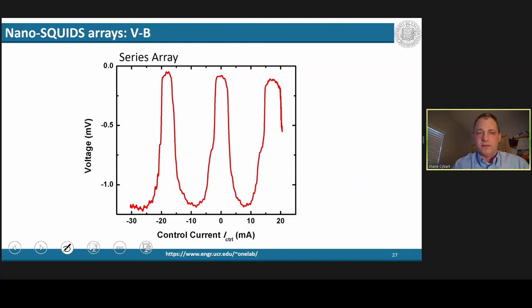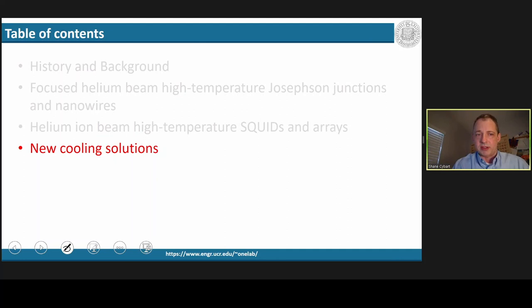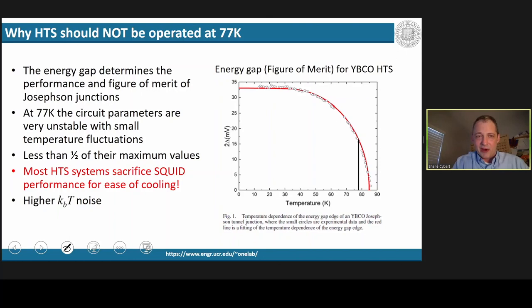For my last section, I'm going to briefly talk about new cooling solutions that need to be done to really make HTS transfer into good technology. And first off, I want to convince you that they shouldn't be operated at 77 Kelvin. It's much easier to engineer better cryogenic cooling systems than to engineer the squid to be different. This shows the energy gap or the figure of merit of a squid as a function of temperature. As you can see, it's a very steep curve over by TC. At 77 Kelvin, which I highlight with the black line, the curve is almost at its steepest.